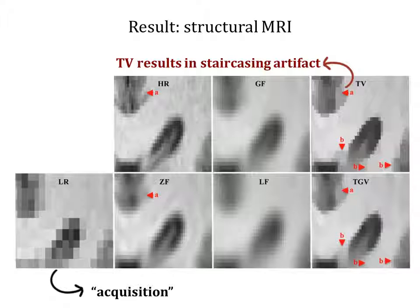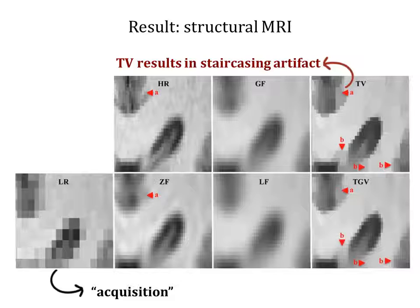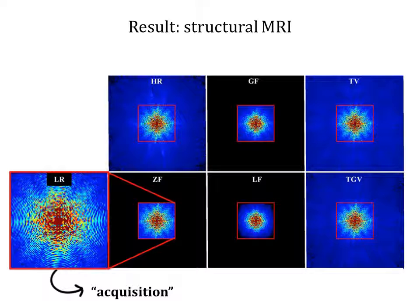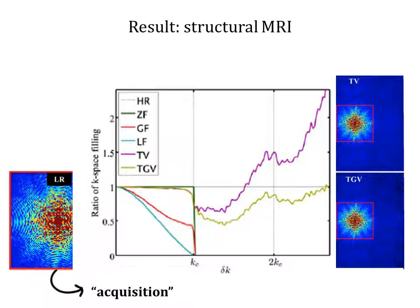Let's now look at some results. Starting with high-resolution anatomical MR images, we crop the k-space to simulate a low-resolution acquisition. Applying different window filters shows that image blur cannot be avoided. Both total variation minimization approaches show good edge preservation. However, TV returns patchy, cartoonish images with staircasing artifacts, whereas TGV provides a much more natural-looking image. Considering the k-spaces, it is clear that window filtering suppresses measured k-space data, whereas TV and TGV extrapolate the k-space in a regularized way. Plotting the differential k-space energy density reveals that TV overshoots high frequencies, whereas TGV gives a good correspondence with the high-resolution data.